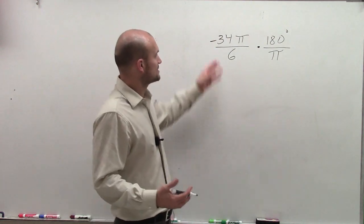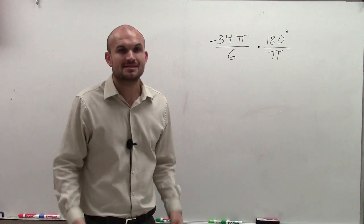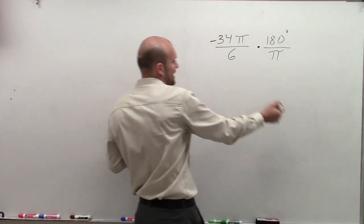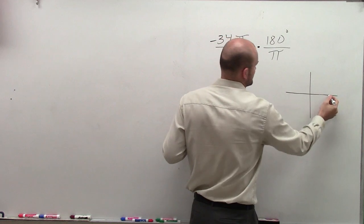But what I'm going to use is I'm going to rewrite this problem using my period as an aid. So if you think about this, if you look at negative 34 over 6, let's look at this graph, right?